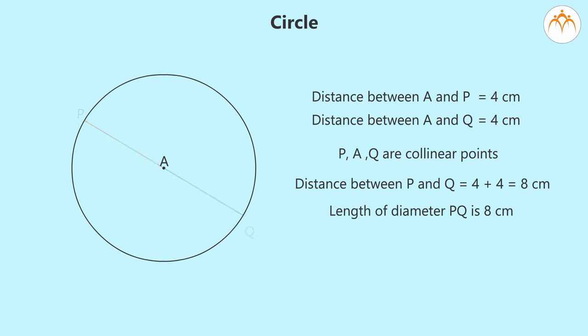Observe that this will happen to any diameter of the circle, that is, length of any diameter of the circle is 8 cm. In general, length of diameter is twice the radius of circle.